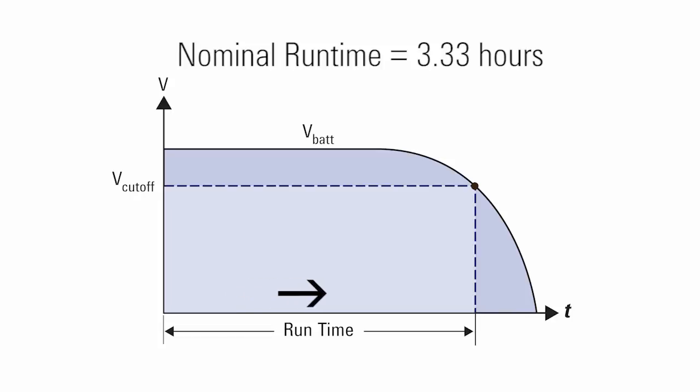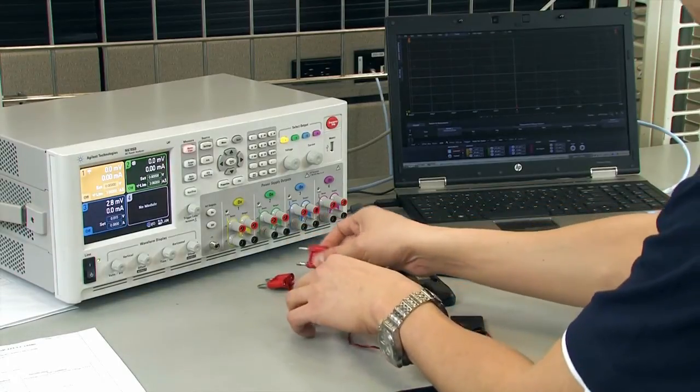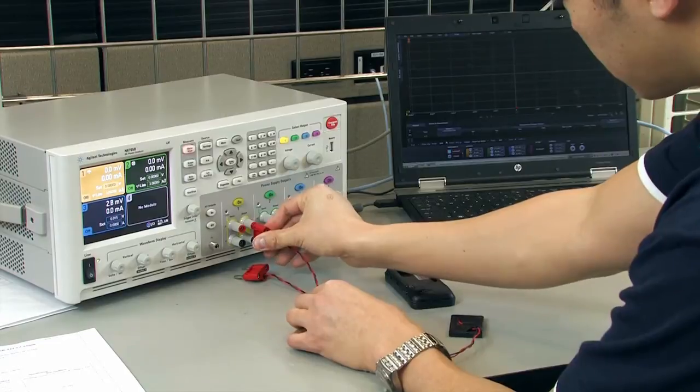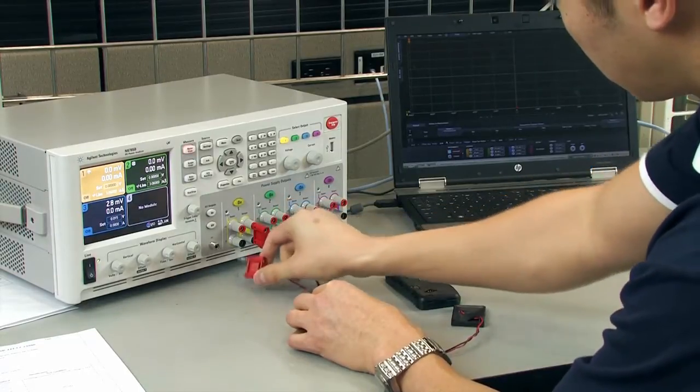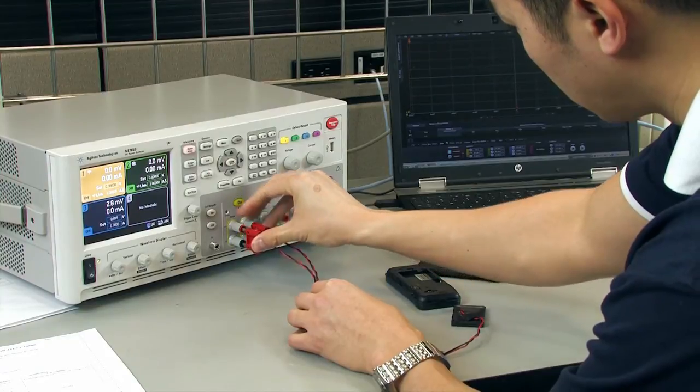It is also worth noting that the measured energy rating can differ from that based on the stated nominal voltage, as the actual battery run-down voltage profile may lead to a slightly different result. Precisely controlling test conditions while accurately logging both the battery's current and voltage assures accurate and consistent results when determining the battery's capacity and energy ratings.